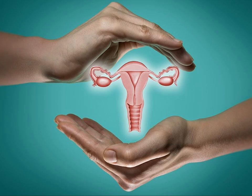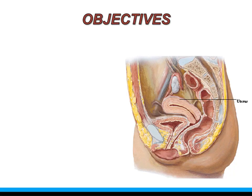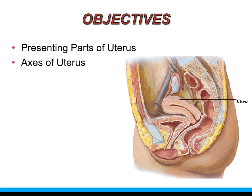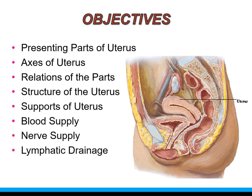Welcome to this video tutorial on Gross Anatomy of the Uterus. We will be looking into the following objectives: General Features and Presenting Parts of the Uterus, Axis of Uterus explaining its position, Relations of the parts, Structure and Supports of Uterus, Blood Supply, Nerve Supply, Lymphatic Drainage, and a few Applied Aspects.